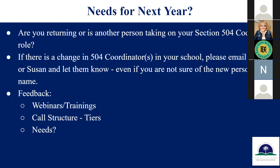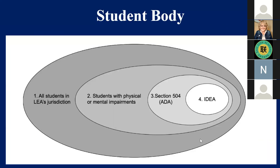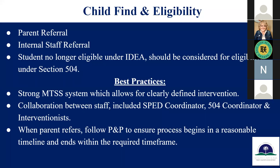Some of the feedback we'd like to elicit is more information or ideas about webinars and trainings, some call structure and the tiers, and what your needs really are — and whether the system worked this year as we switched it up. As a reminder for 504s, this is that big picture of the student body. Your 504 should be a small population of students — it shouldn't be the norm. You have all your students, then your physical or mental health students, then your 504s, and then your students with IEPs. As you're thinking about next year, remember the school's child find and eligibility processes and requirements, and be part of those MTSS systems and meetings.